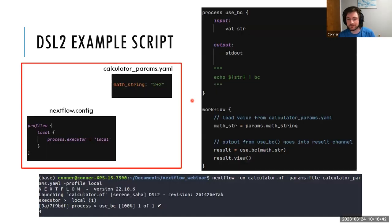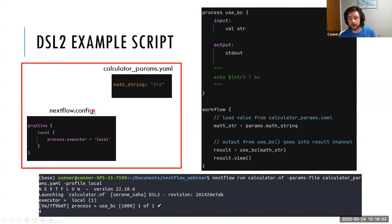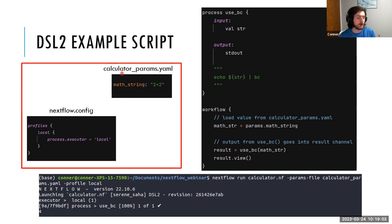Let's look at an example DSL2 script. There's a lot that appeared on screen, but let's start by looking at the parameters file and config file — two of our big arguments for `nextflow run`. In the parameters file, we have things that might change from run to run. The purpose of this workflow is to call a command-line calculator and give it a mathematical equation to evaluate. So in the parameters file we have the equation — 2 plus 2. In the config, we have our local profile, which tells Nextflow it can run things itself — no Slurm or Kubernetes or Amazon Web Services needed.